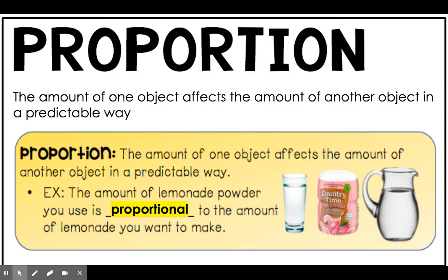The next thing we're going to take a look at is proportion. Proportion means that the amount of one object affects another object in a predictable way. A really good example is if you've ever made powdered lemonade. The amount of lemonade powder you're going to use is proportional to the amount of lemonade you want to make. If I was making a pitcher of lemonade for me and all my friends, I would put in maybe four or five scoops of lemonade powder. But if I was making a glass for myself, I would probably only put in one scoop. The proportion of powder I use is related to the amount of water — the amount of one thing affects the amount of another.